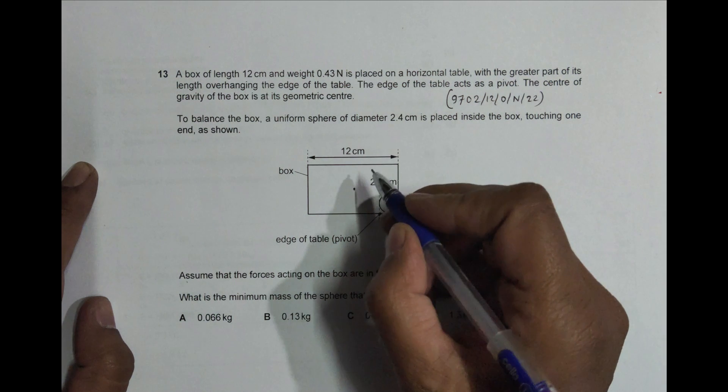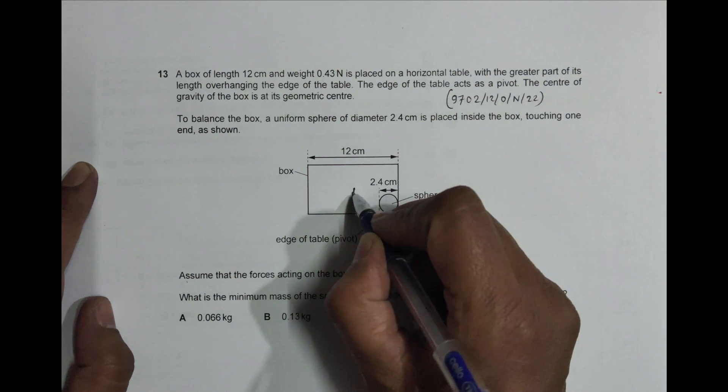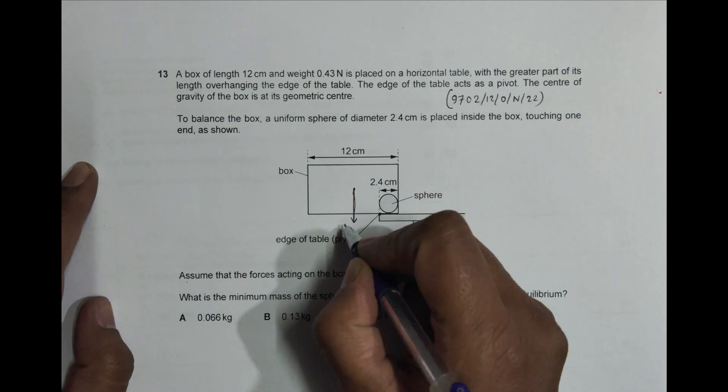So that means the weight will be acting right here. The weight of the box will be acting right here, which is 0.43 Newton. So weight will be acting here.